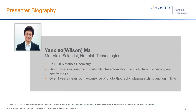Before I start, here's a little bit about myself. My name is Wilson Ma and I'm from a chemistry and material science background with over five years of microscopy and spectroscopy experience and over four years of clean room experience. After I got my PhD from the University of Alabama, I joined Nanolab as a material scientist, mainly focused on materials microanalysis using FIB-SEM.